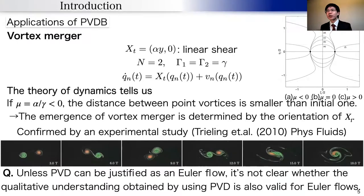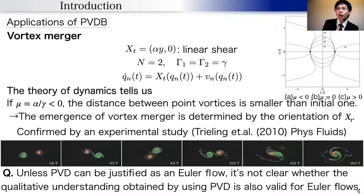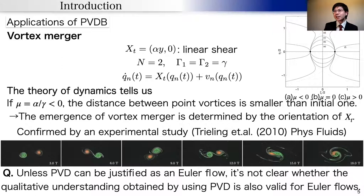As an application, point vortex dynamics in background fields is used as a model of vortex merger: the process by which kinetic energy distributed in large and small vortices finally concentrates in a large-scale structure and becomes dormant, called inverse cascade. This is regarded as a fundamental process of two-dimensional turbulence.